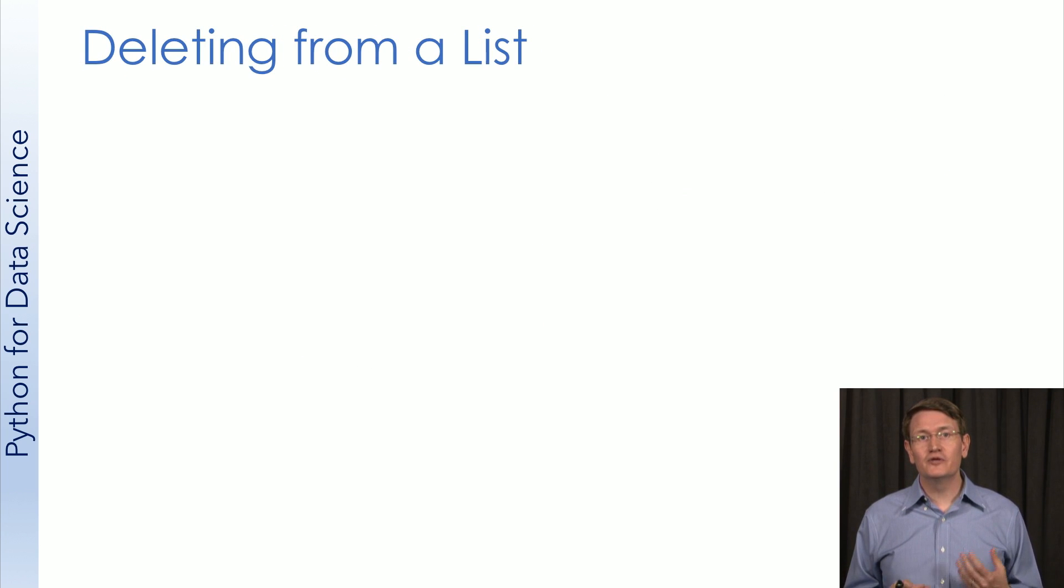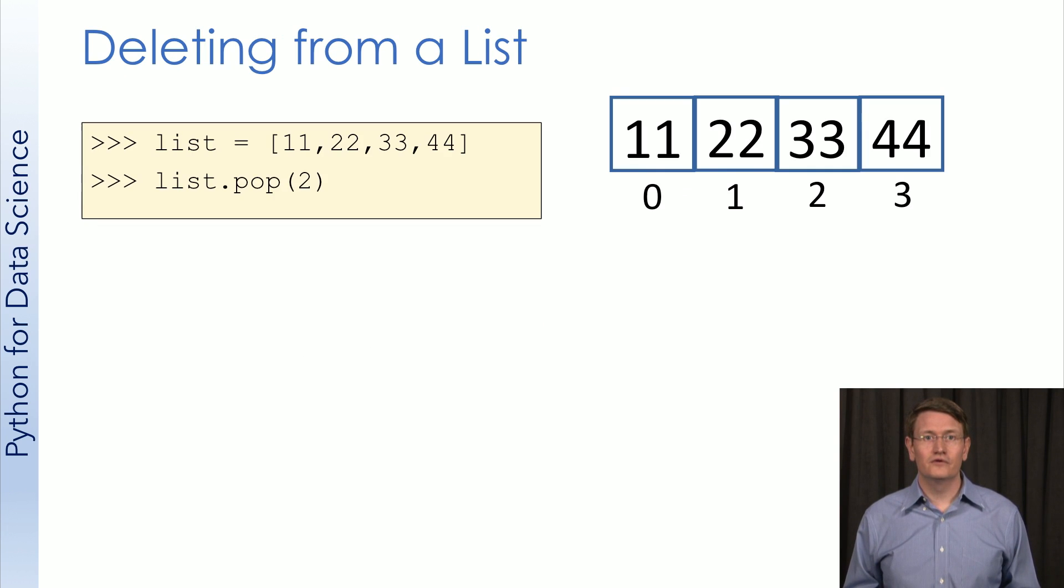You can add elements, but you can also remove them. First, the pop method. We create our standard list now with the four elements. If we call pop on the list, it will return and remove the element at that location in the list. Here, we're asking to delete the element at position 2. This will return the element 33, and remove the element from the list. You'll then shift the values in the remainder of the list over by 1.